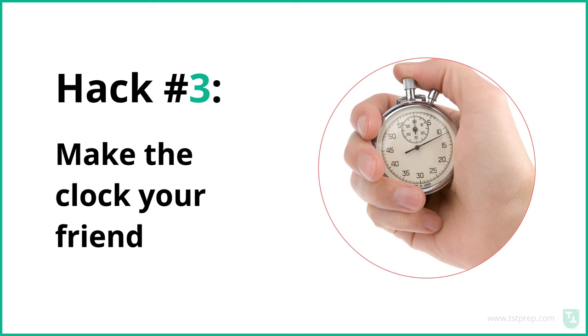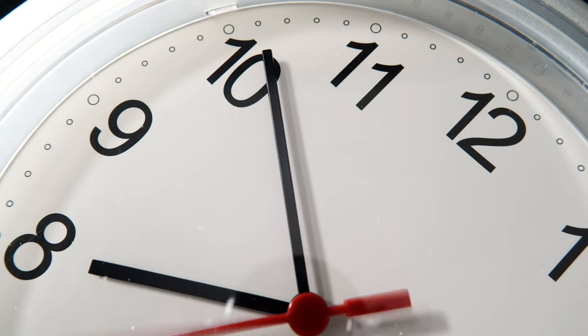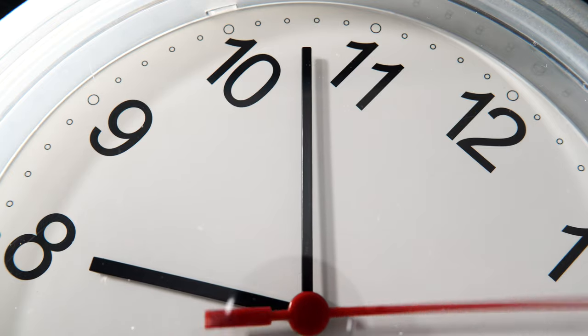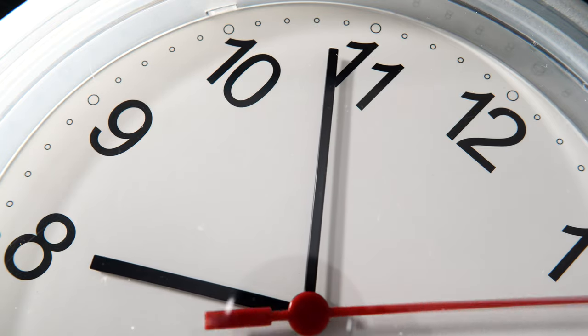Hack number three is to make the clock your friend. Timers are scary — when you see a number counting down and you have to speak, it makes you nervous. So when you're practicing speaking at home, practice while looking at a clock. It'll be hard to get used to at first, but after you feel comfortable answering the questions, start using a clock. Look at the clock as you speak so you can be ready on test day and won't feel so nervous.